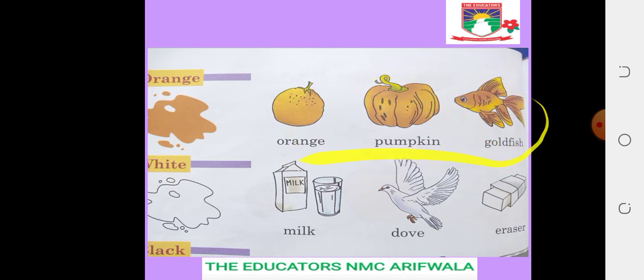Orange, pumpkin, and goldfish - these three things we have. Which color is? Orange color. When we want to identify orange color, we will look for those things which are orange.